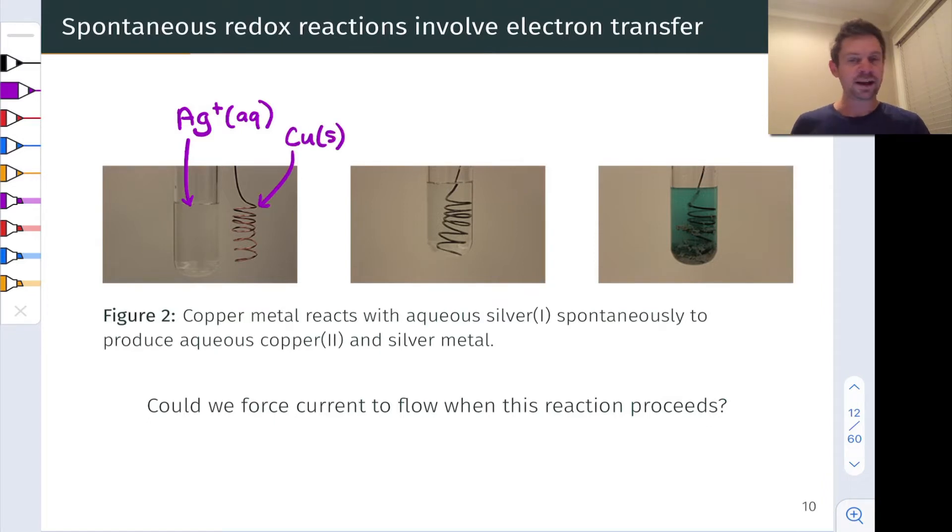If we place that copper wire inside the silver nitrate solution, initially it looks like not much is happening, but over time we end up with a blue solution and some silver-colored metal in the reaction mixture. This blue solution is due to aqueous copper two plus ions. And as you may have guessed by now, the silvery metal is silver zero or elemental silver.